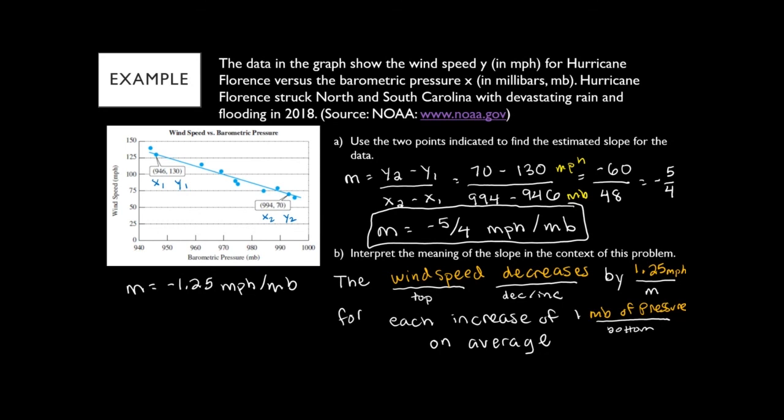You can see how slope gives us a rate of change — describing how much Y changes as X changes. That's what interpreting the meaning of slope is all about.